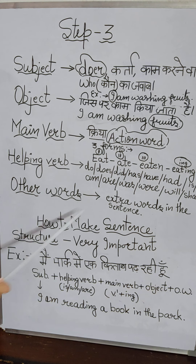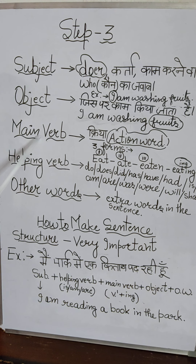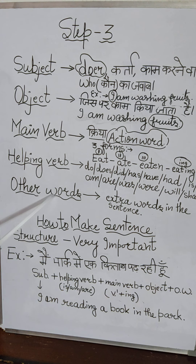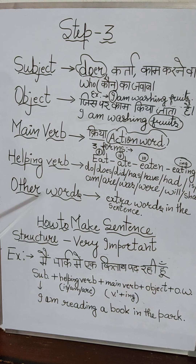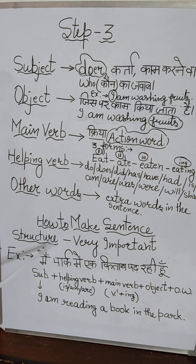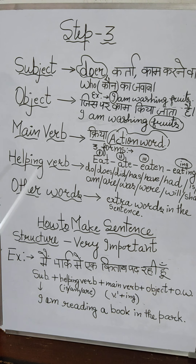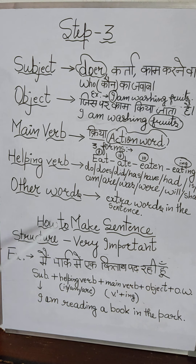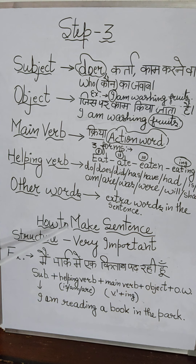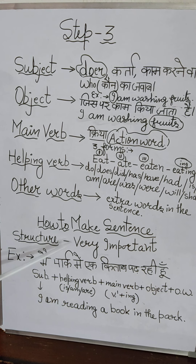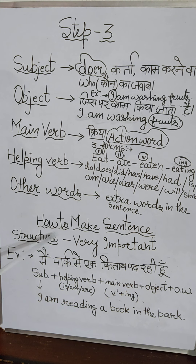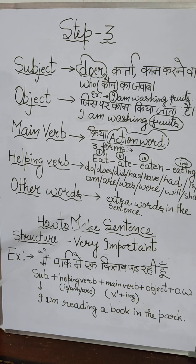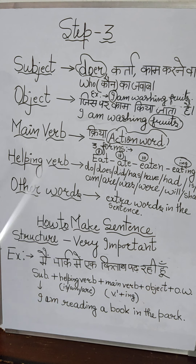Now you have full knowledge about this: what is the subject, what is the object, what is the main verb, what is the helping verb, and what are other words. Sentences also have structures, just like when you make a dish, a recipe, or a toy — they all have a structure.